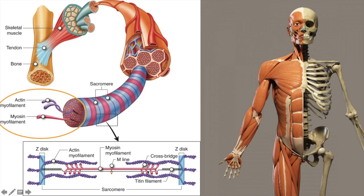So in pink we have our thick myosin filaments. These have little heads on the end. And in purple we have our actin filaments. These are slightly thinner. So let's learn a bit more about actin and myosin.